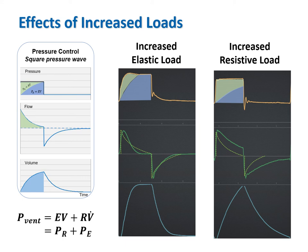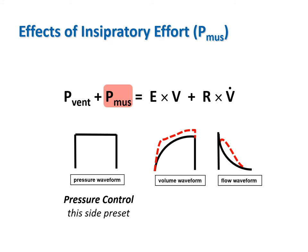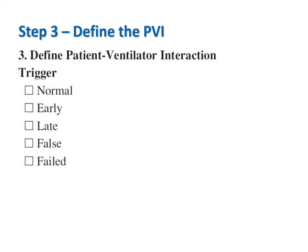For pressure control with a square pressure waveform, increased elastic and resistive loads decrease the tidal volume. For volume control, inspiratory effort will deform the pressure waveform downward toward the baseline. For pressure control, inspiratory effort will deform the volume and flow waveforms upward away from baseline. The important thing to remember is that when there is a large PMUS, it may be impossible to detect the effects of changes in compliance and resistance.